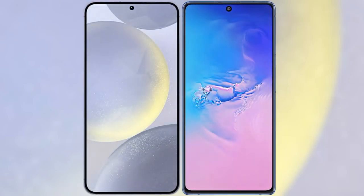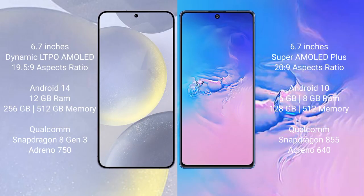I will compare the new Samsung Galaxy S24 Plus with Samsung Galaxy S10 Lite. Samsung Galaxy S24 Plus comes with a 6.7-inch Dynamic LTPO AMOLED display and aspect ratio 19.5:9. Samsung Galaxy S10 Lite comes with a 6.7-inch Super AMOLED Plus display and aspect ratio 20:9.